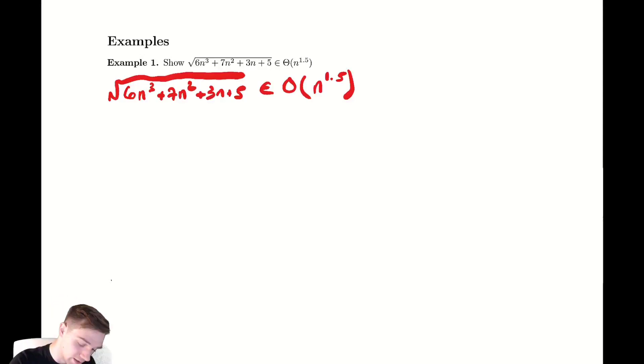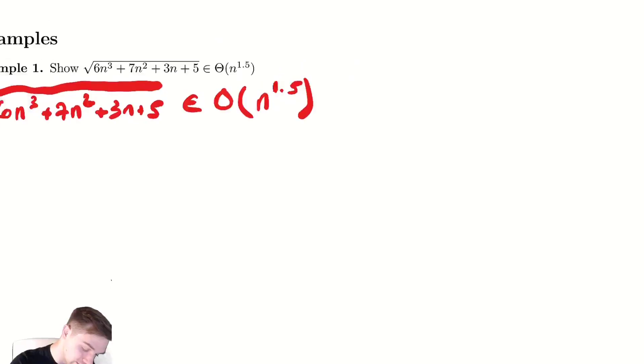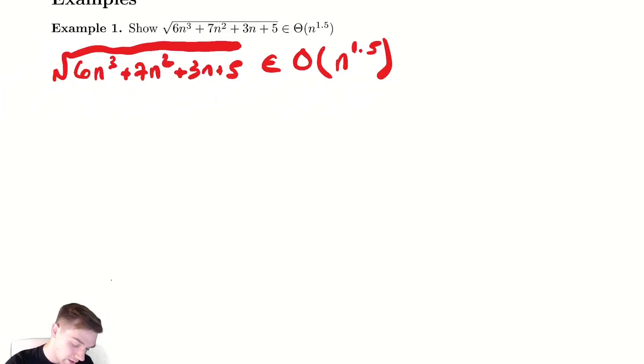So let's zoom in here so we can write a little bit neater. We want to try and make this look like some constant times n to the 1.5. That is our goal. So if we could make every single thing in that expression look like n³, maybe that would help.